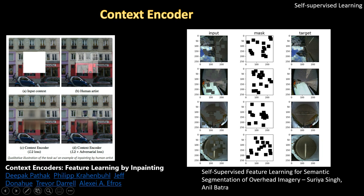This idea was further extended in the paper 'Self-supervised Feature Learning for Semantic Segmentation of Overhead Imagery'. Although the picture shown is generated by me, the actual paper worked on satellite images. Here, instead of cropping out one patch, you can crop out multiple patches and task the network to fill them all in.